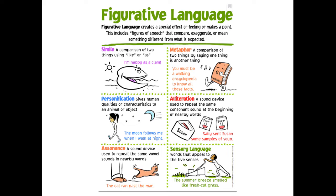One example of figurative language that we'll start looking at is simile. A simile adds meaning to an idea by comparing two things using the word 'like' or 'as.' For example, the simile 'the trees are like skyscrapers' tells the reader that the trees in this example are very tall.